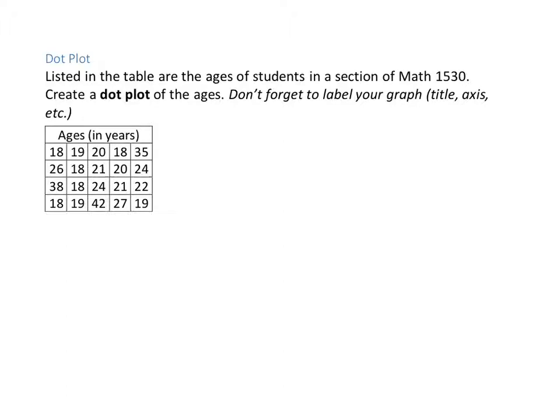So it looks like the minimum age for a college student in that classroom was, it appears to be 18, and the maximum seems to be 42. So we need something that we can put in dots that go from 18 to 42. So we're going to create an axis, a horizontal axis, just a horizontal line. We're going to try to make it evenly spaced as best we can.